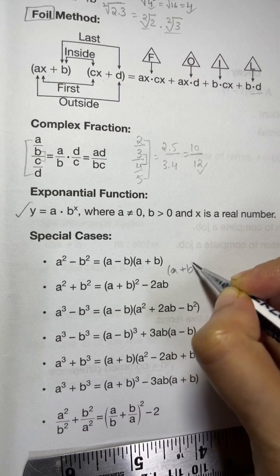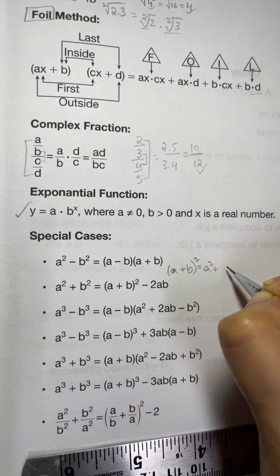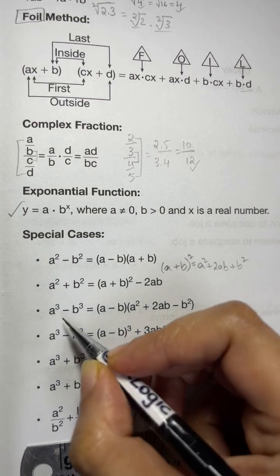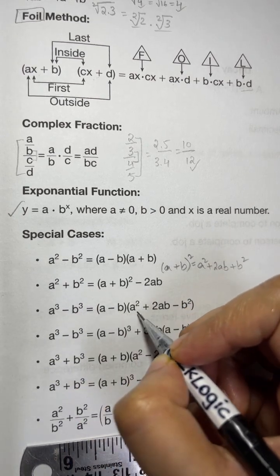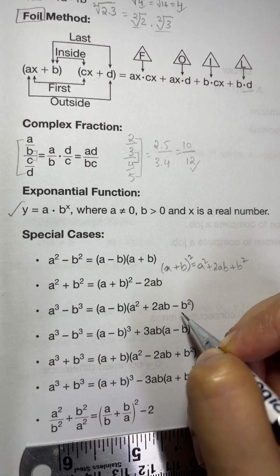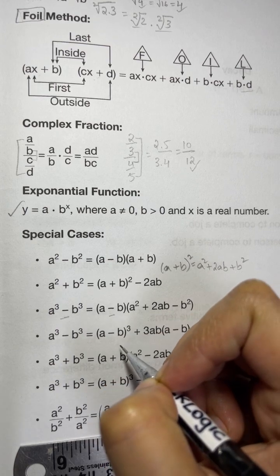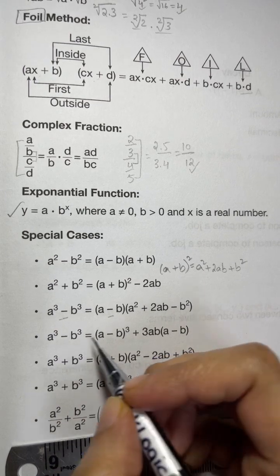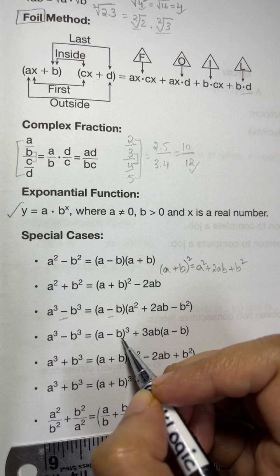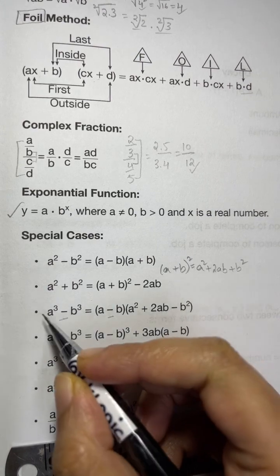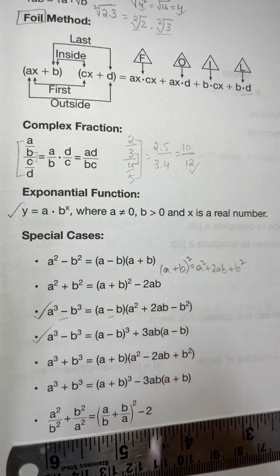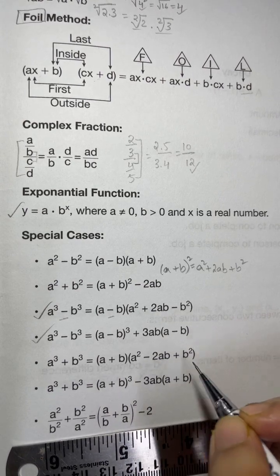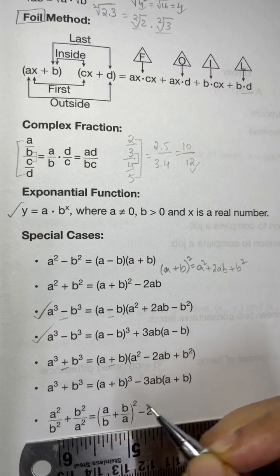So (a plus b) squared equals a squared plus 2ab plus b squared. When you bring 2ab to the other side it becomes negative. Now for cubes: a cubed minus b cubed equals (a minus b)(a squared plus 2ab minus b squared) — easy to remember because the signs follow a pattern: the sign here equals this one, and the opposite sign appears next.